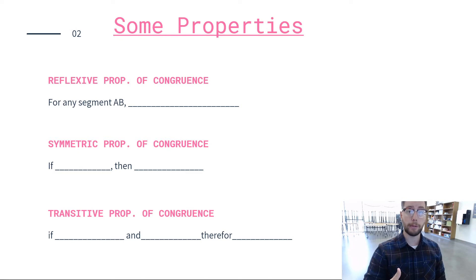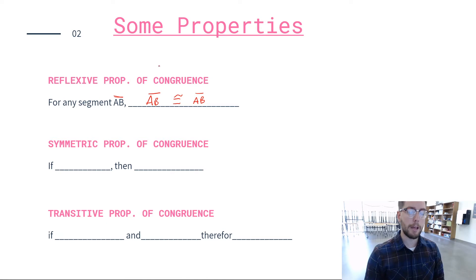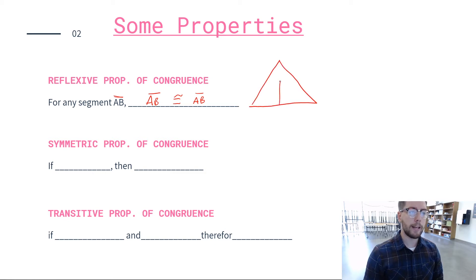Go ahead and start writing these down — these are super important to remember. Reflexive Property of Congruence: for any segment AB, line segment AB is congruent to line segment AB. That sounds obvious, but it becomes important when talking about triangles. If we have a triangle with a line through the middle, AB on one side is the exact same line as AB on the other side, so AB is congruent to AB because it's the same line.